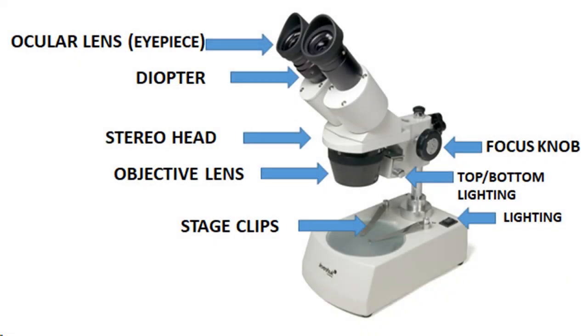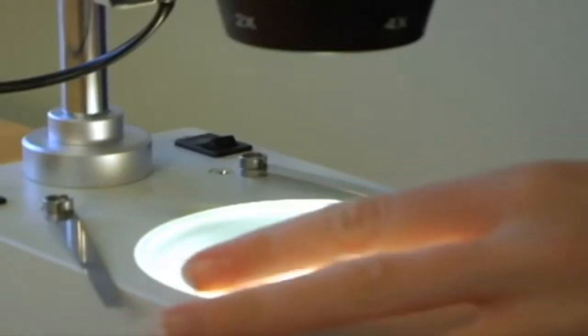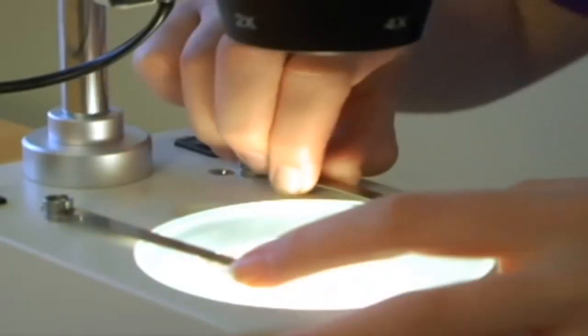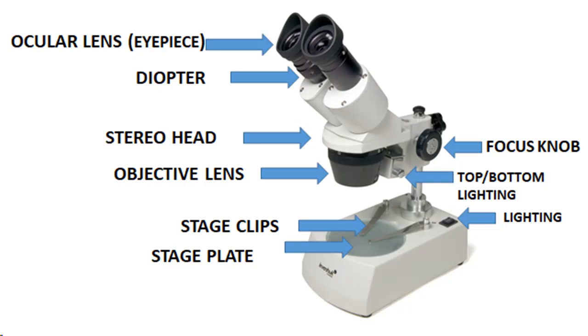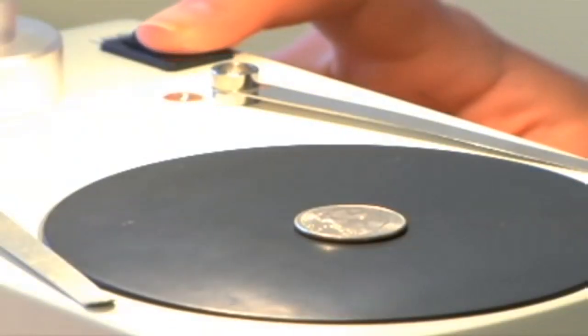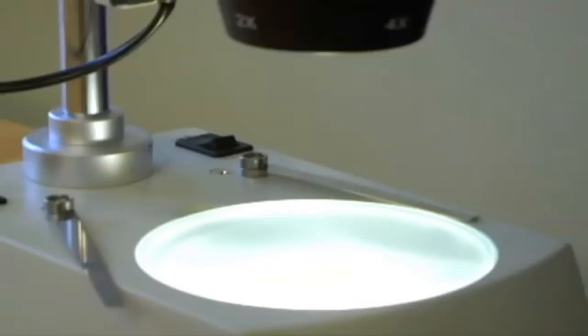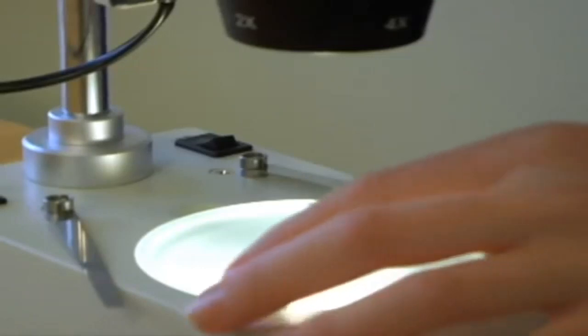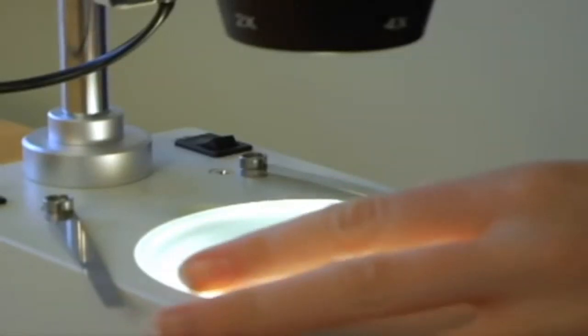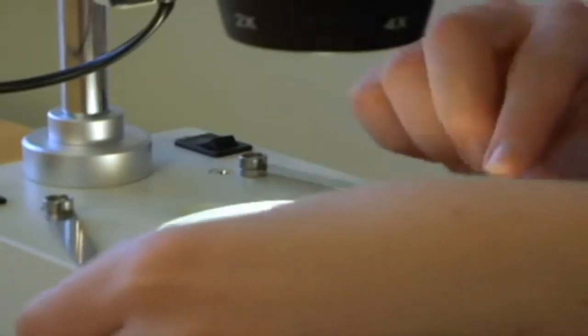The next part is called stage clips. The stage clips help to hold the slides or other thin objects in place on the stage. The last part is called stage plates. It is located directly under the objective lens and is where the specimen is placed for viewing. Some stereomicroscopes have reversible black and white stage plates to provide appropriate contrast with the object being viewed.